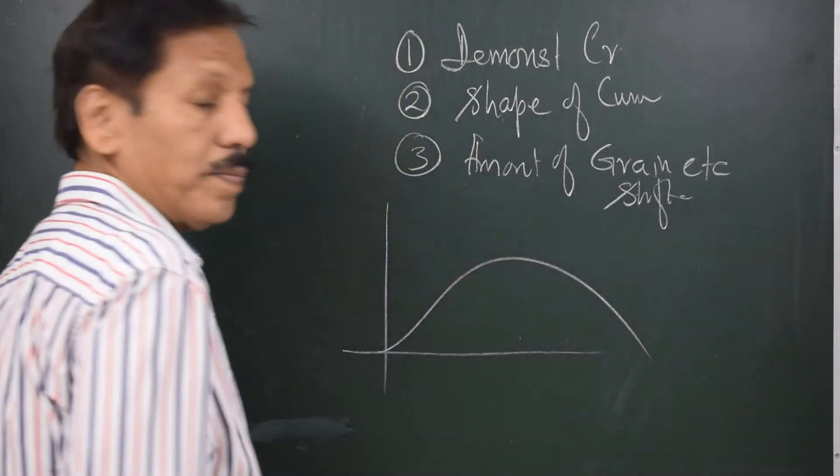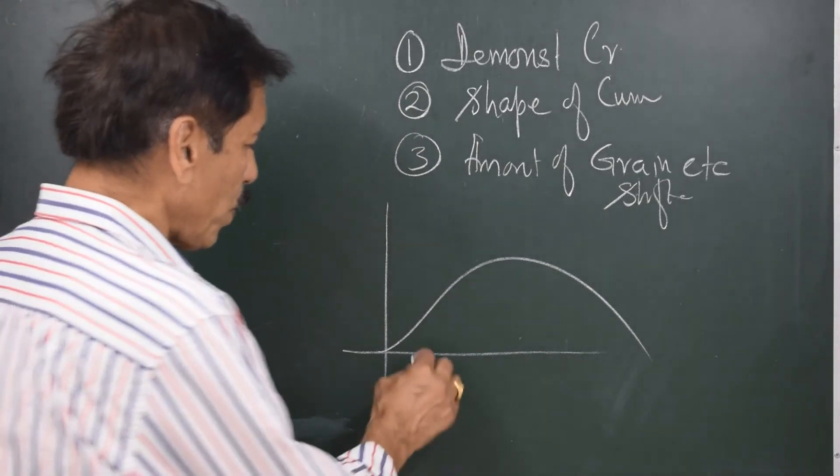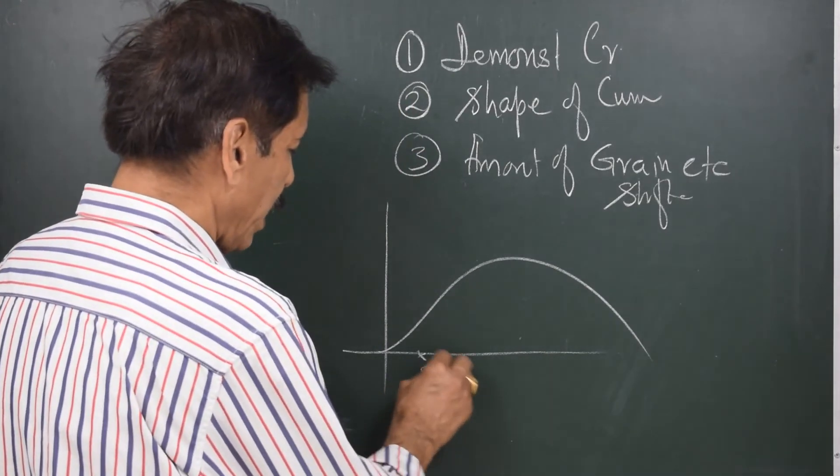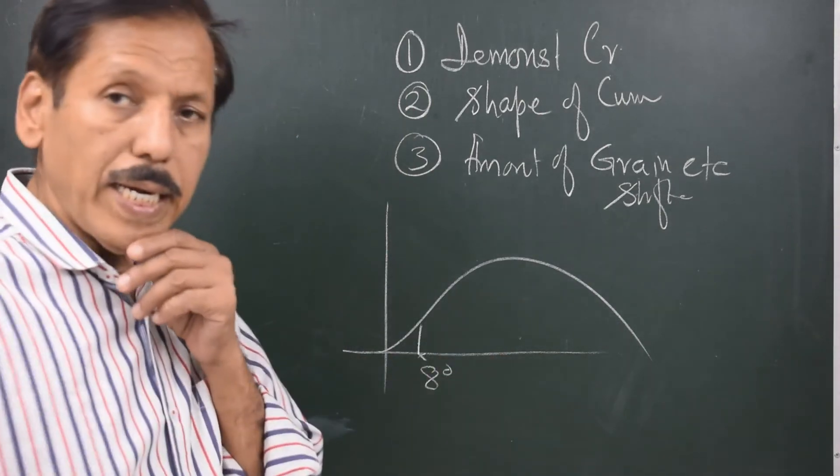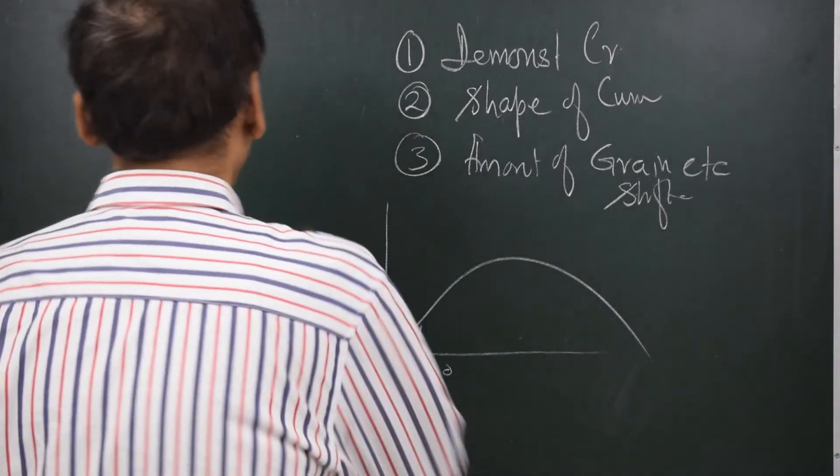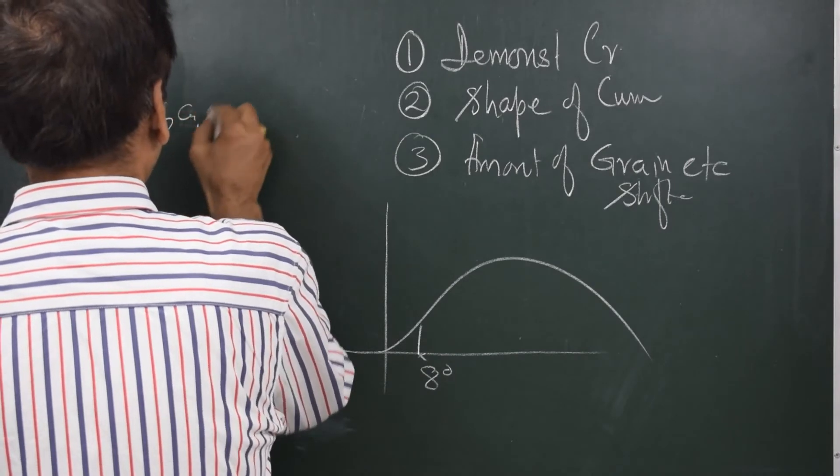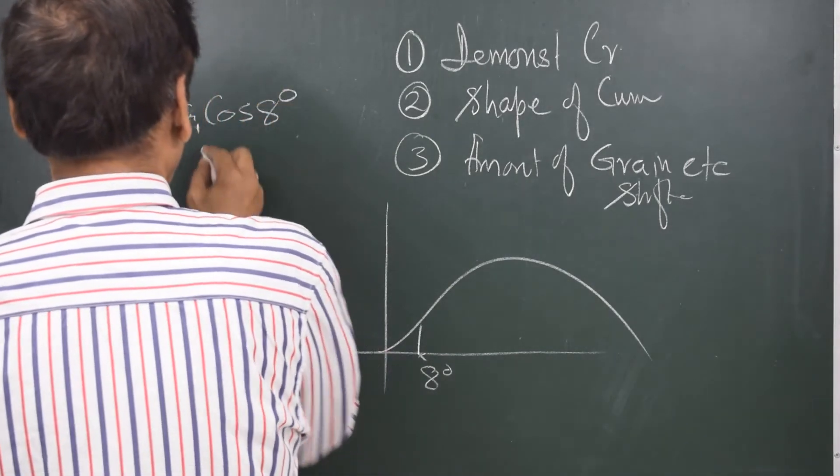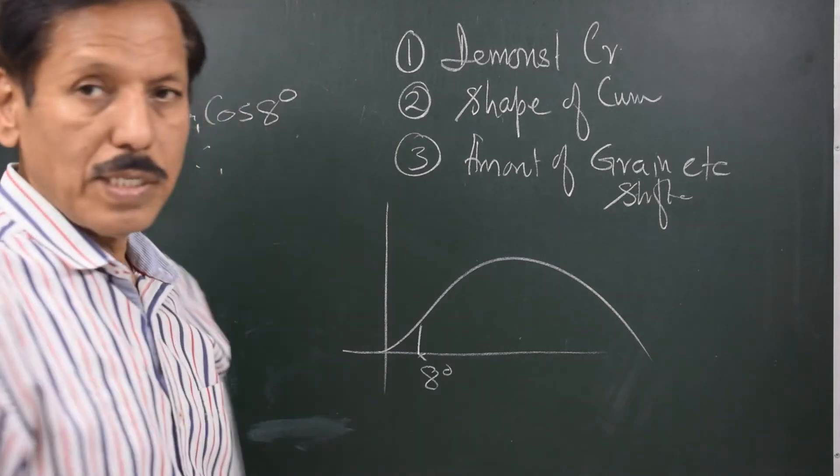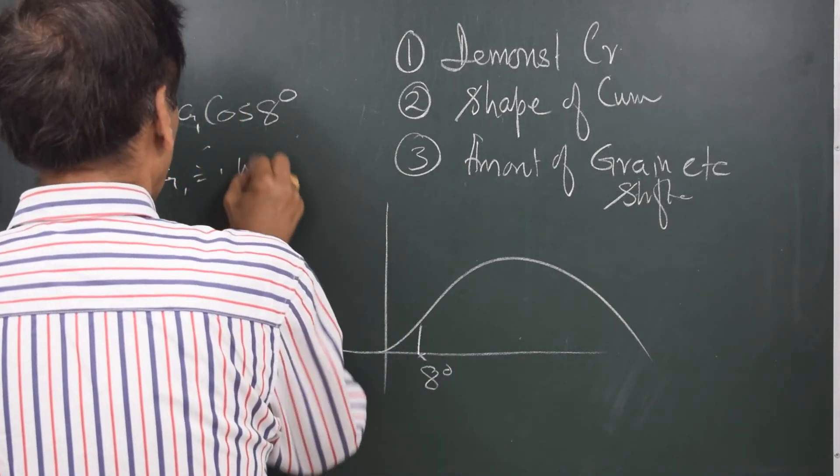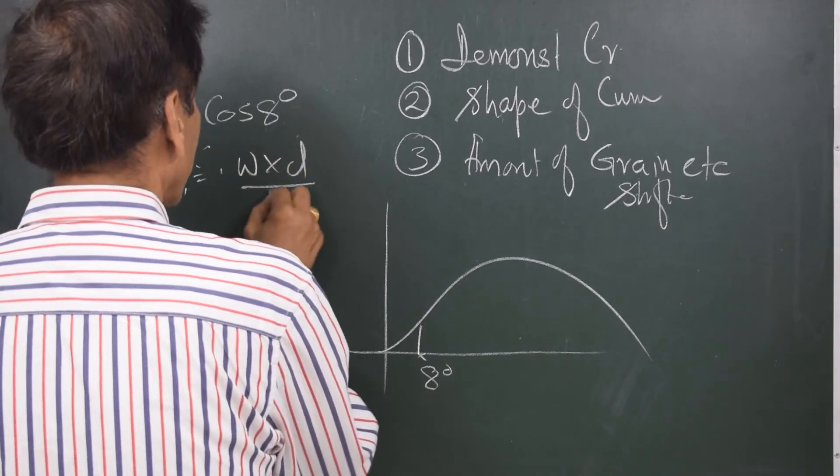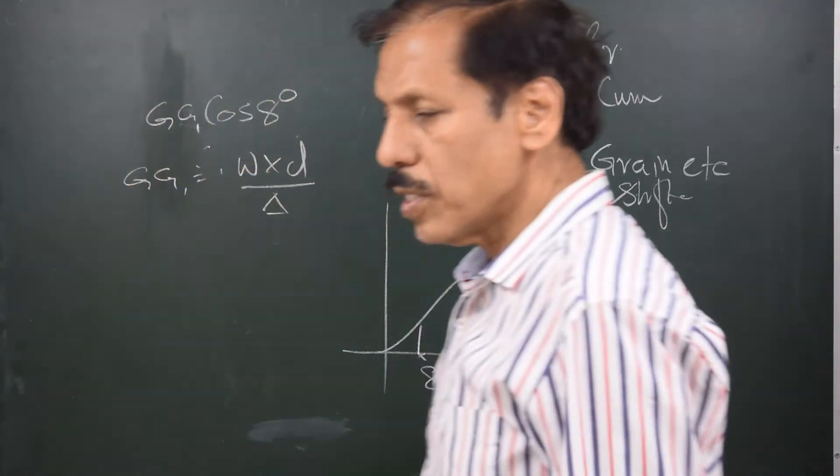If this is the GZ curve in case of grain and suppose we get a list of say 8 degrees, we measure the GZ at 8 degrees. GZ at 8 degrees is equal to GZ1 cos 8 degrees. So therefore, we can find out the GZ1. But GZ1 is equal to W into D upon displacement. This is the normal formula.